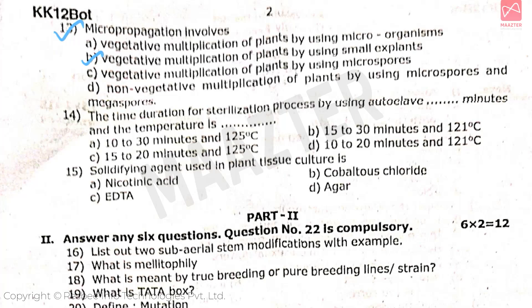Question number 14: the time duration for sterilization process by using autoclave — dash minutes and the temperature is dash — the correct answer is option B. Question number 15: solid fining agent used in plant tissue culture is — the correct answer is option D.